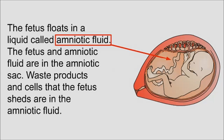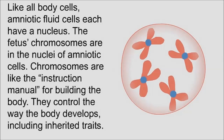The fetus floats in a liquid called amniotic fluid. The fetus and amniotic fluid are in the amniotic sac. Waste products and cells that the fetus sheds are in the amniotic fluid. Like all body cells, amniotic fluid cells each have a nucleus. The fetus's chromosomes are in the nuclei of amniotic cells.